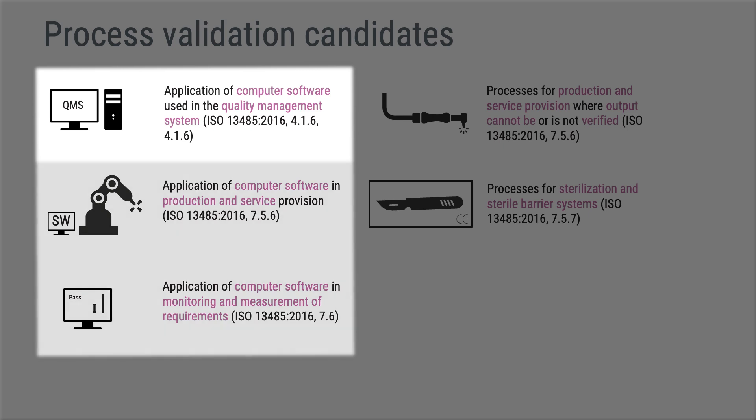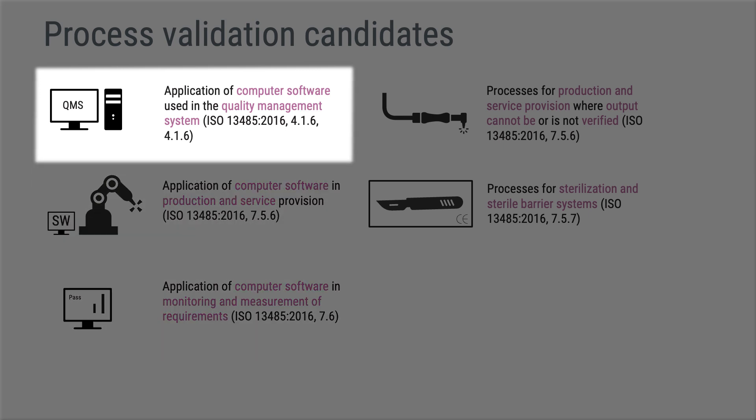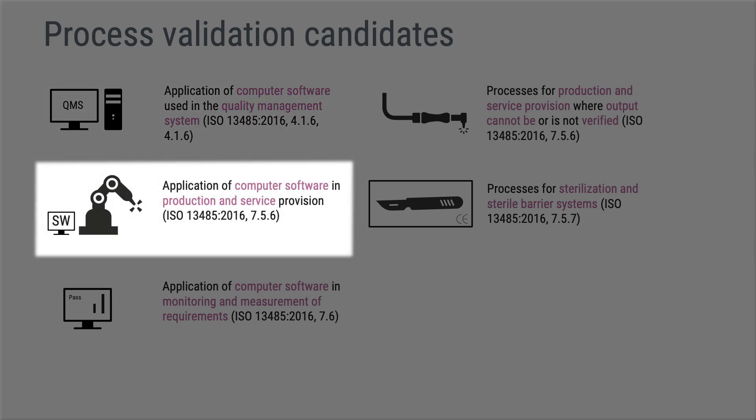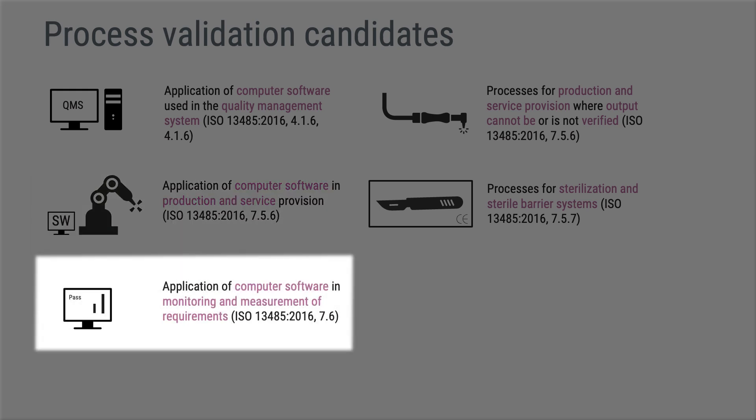One category of processes that must be validated includes software. The first requirement relates to software used in a quality management system — for example, an eQMS solution, a software-based complaint handling system, or a software for risk management. Secondly, you also have to validate computer software used in production and service provision — for example, a robot or software that controls a machine, or a machine controlled by embedded software, which is quite common in automated production. Lastly, validation is required when software is used for the monitoring and measurement of requirements, such as software used to analyse products in process or finished products before release. As soon as any part of your production equipment is controlled by software — whether embedded, standalone, or off-the-shelf — it must be validated.